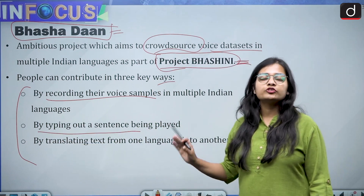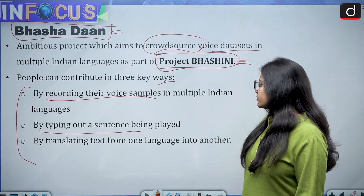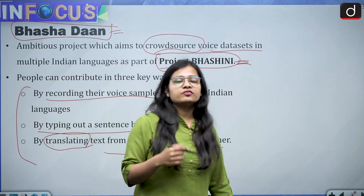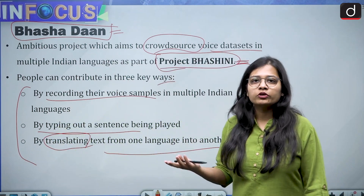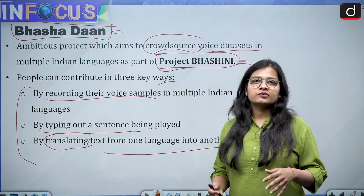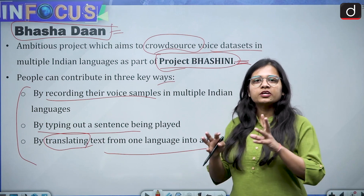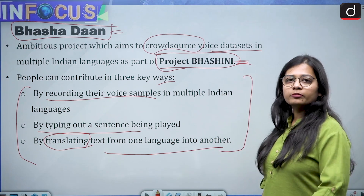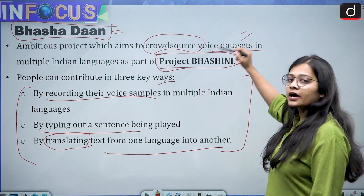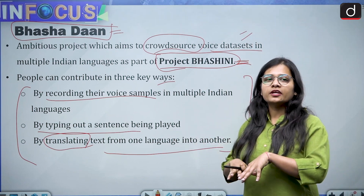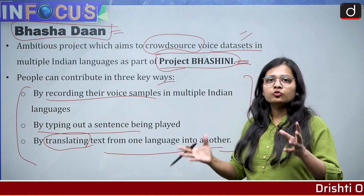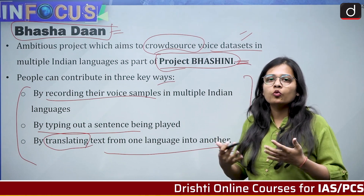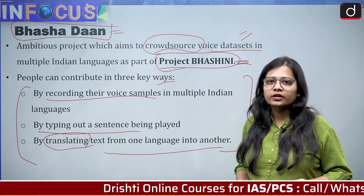The second way to contribute to Bhasha Dan is by typing out a sentence being played. The third way is by translating text from one language into another — which is very important but can only be done by people who understand two different languages, since translation errors can cause meaning to be lost. These are the ways people can contribute to the ambitious Bhasha Dan project, which tries to collect data sets from different languages and build a repository where people can get answers in their own language.